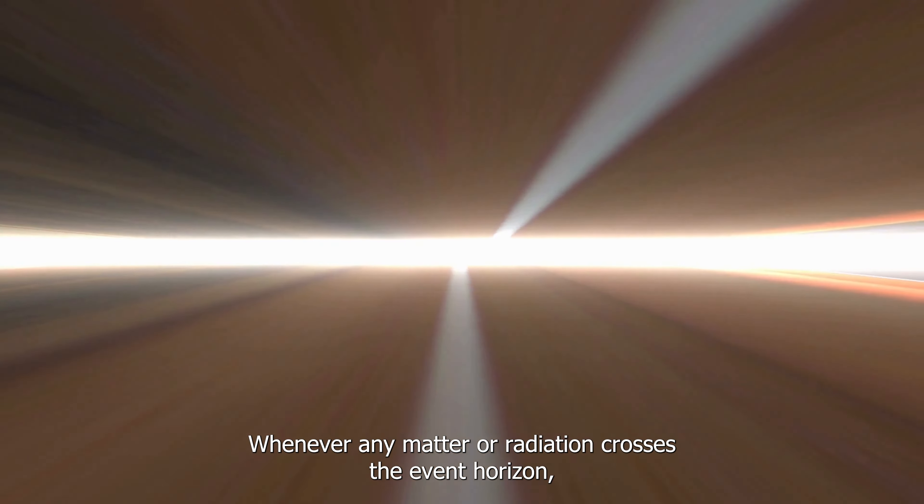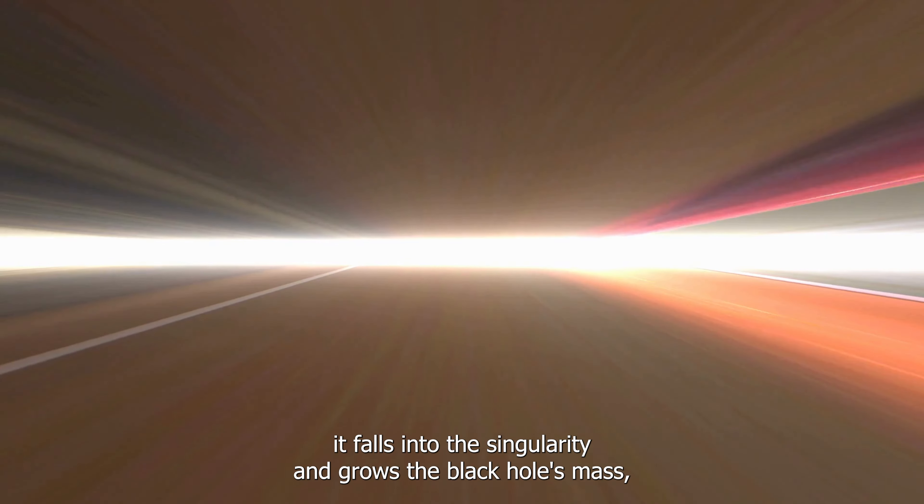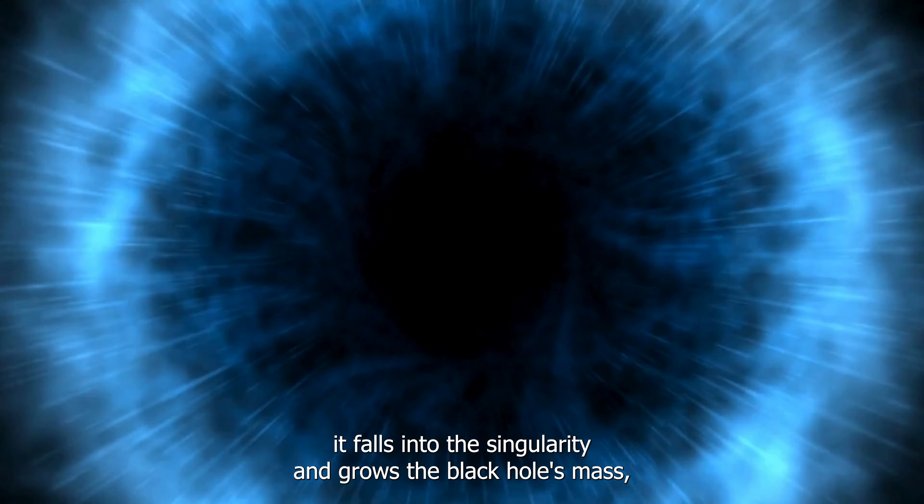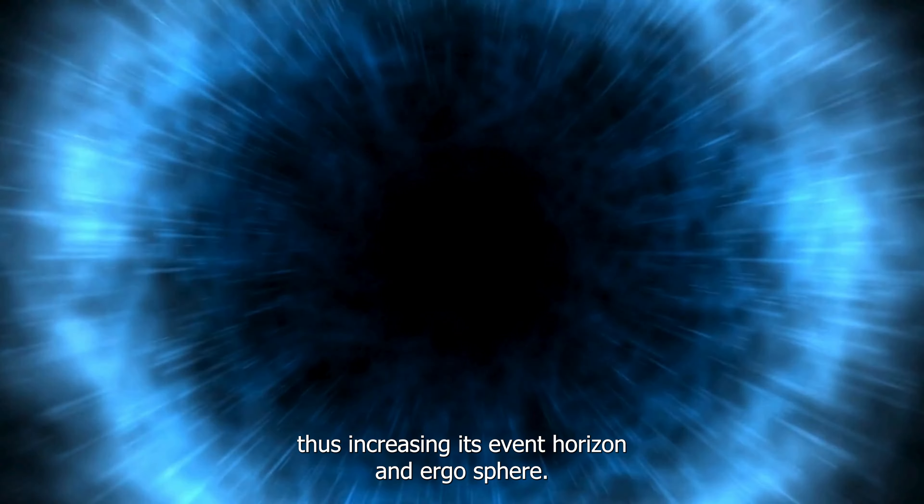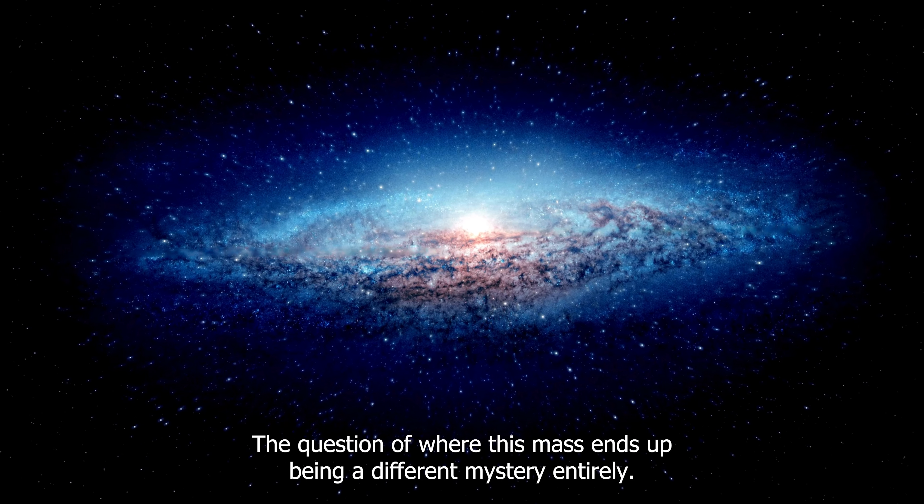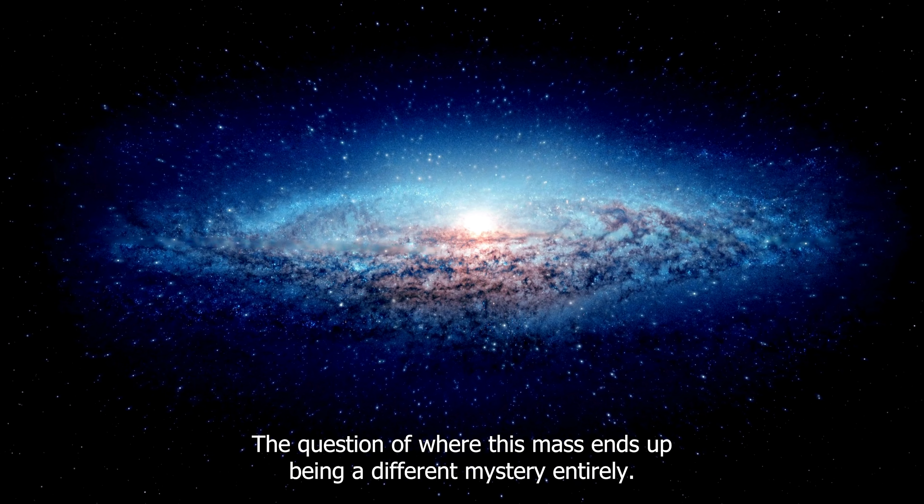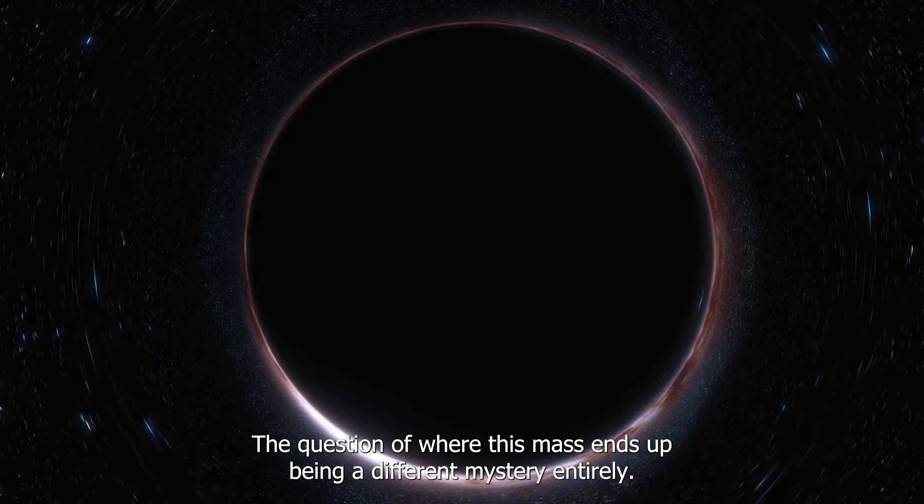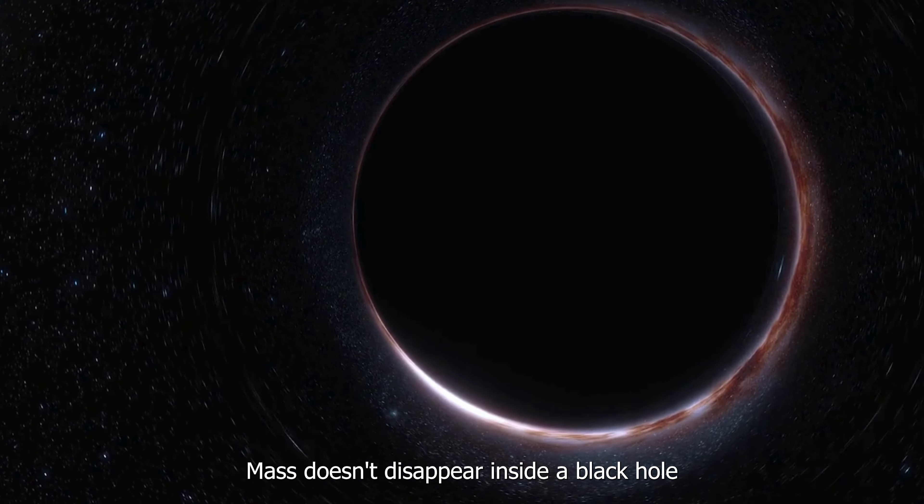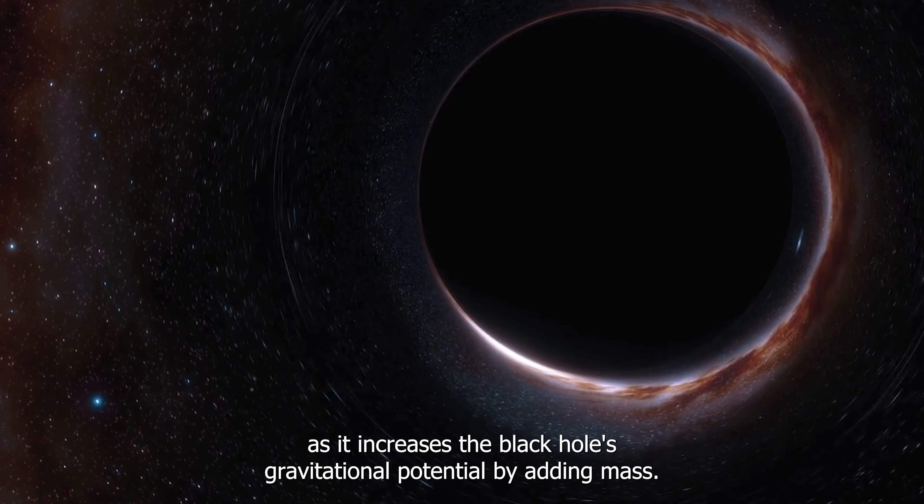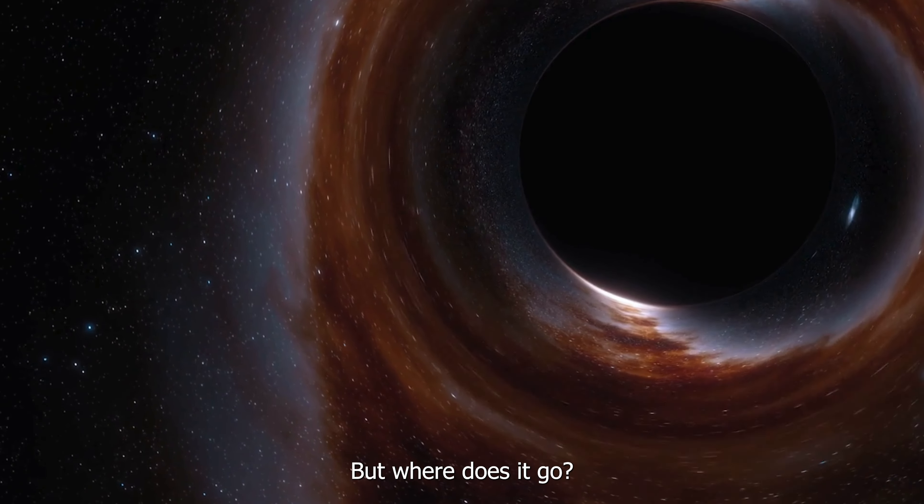Whenever any matter or radiation crosses the event horizon, it falls into the singularity and grows the black hole's mass, thus increasing its event horizon and ergosphere. The question of where this mass ends up being a different mystery entirely. Mass doesn't disappear inside a black hole as it increases the black hole's gravitational potential by adding mass, but where does it go?